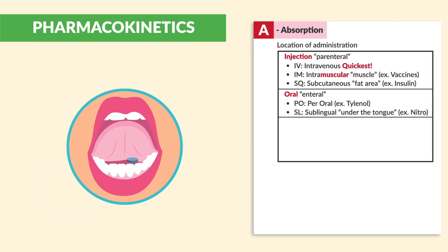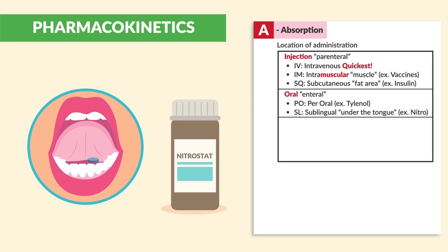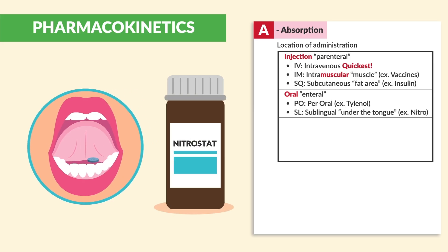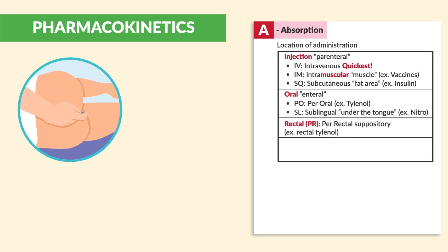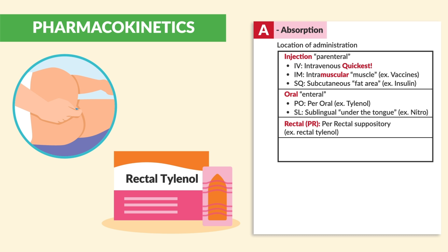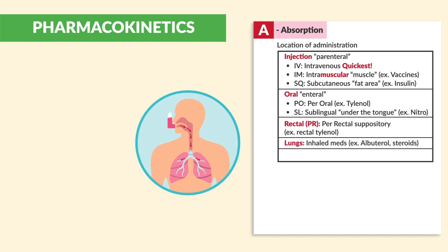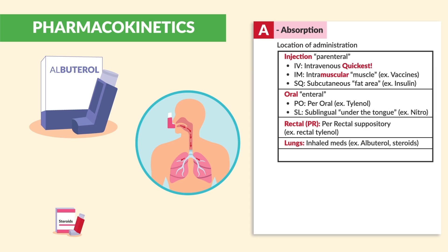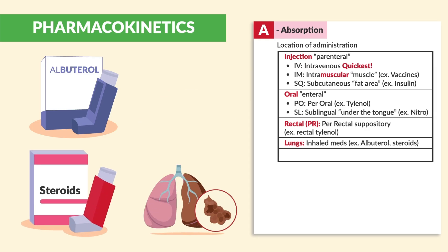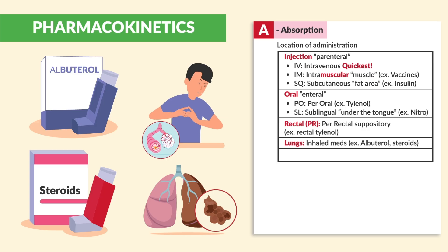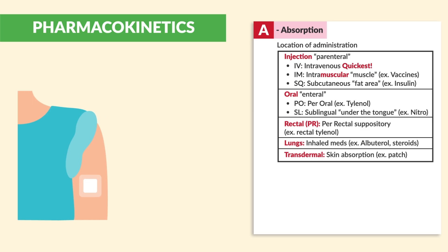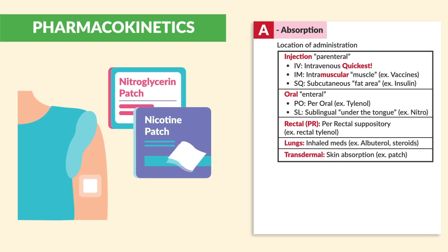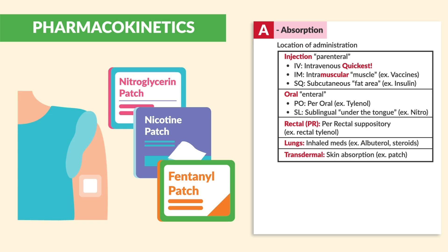We also have SL — sublingual — under the tongue, for example when giving nitroglycerin for chest pain or a heart attack. We also have rectal, or PR — perrectal suppository — for example, rectal Tylenol. And even the lungs: inhaled medication like albuterol for asthmatic patients, and steroids for anyone with lung disease like COPD or asthma. And lastly, transdermal — absorbed from the skin. Examples include a patch like nitroglycerin, a nicotine patch, or even a fentanyl patch, which is used for pain.